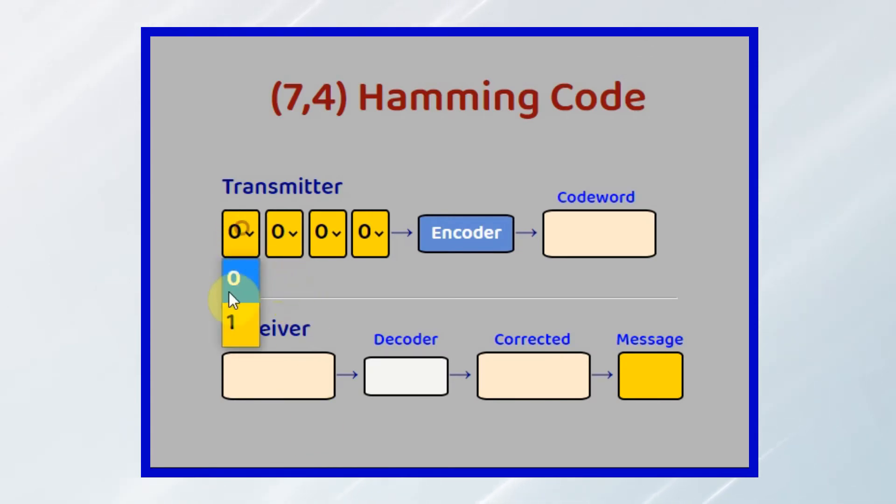Let's try another example. This is the generated codeword. You can see that at the receiver, there is one single error here. The decoder will detect and correct the error, and extract the message.